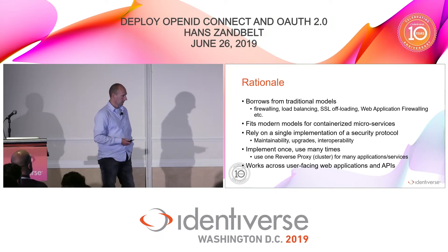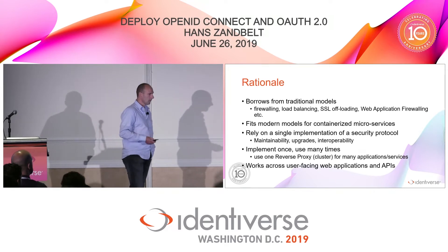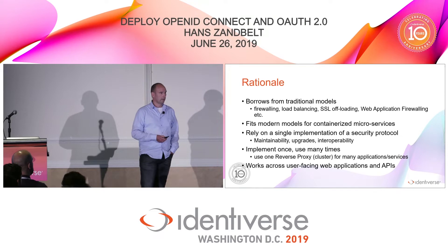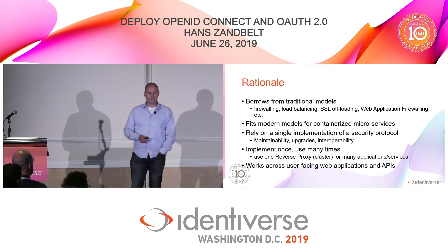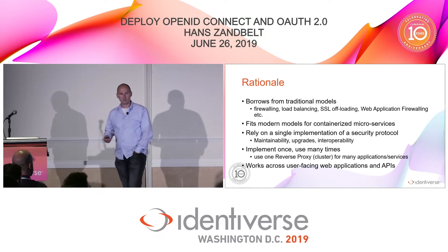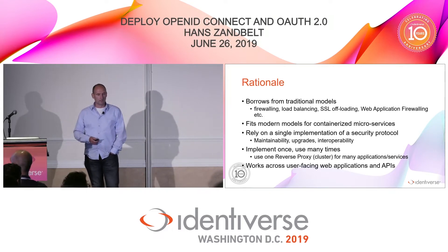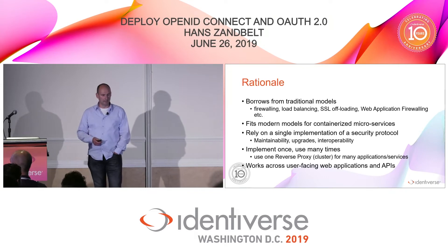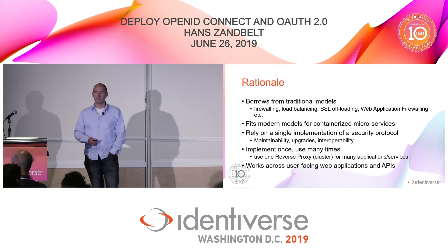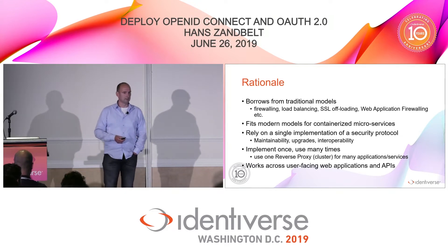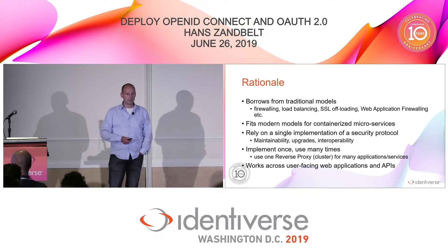It also provides a certain warranty about interoperability, because you rely on a single implementation and don't have to rely on the variety of grant types that may or may not be implemented in certain libraries or languages. You deploy it in a reverse proxy model, implement it once, and use it many times. You can use one reverse proxy server or cluster for many applications and services, scale it out horizontally, and use it to front a lot of different APIs and services. Externalizing makes it easier and more maintainable, and it works across user-facing browser-based web applications and APIs.